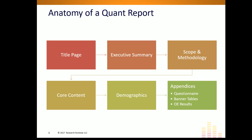After the executive summary, we typically have the scope and methodology section, where we discuss when the data was collected, what our sampling frame was, what our quotas and screeners were, and what our data collection mode was — whether phone, mall intercepts, online, etc. In some cases, professional researchers prefer to put the scope and methodology first; in other cases, the executive summary comes first.